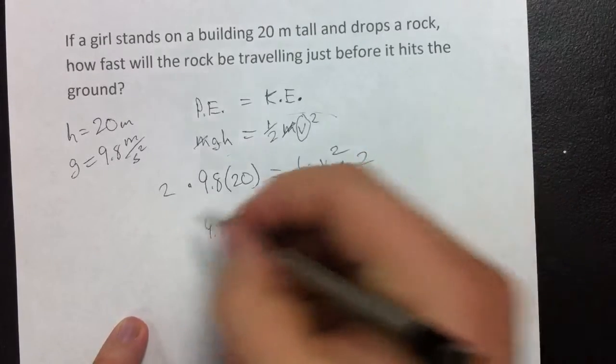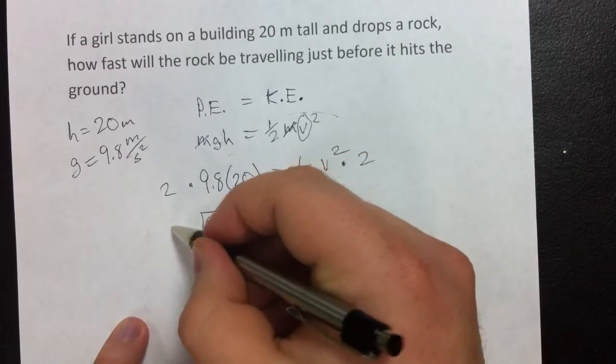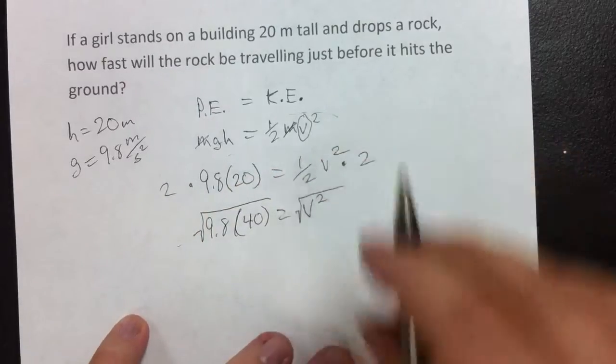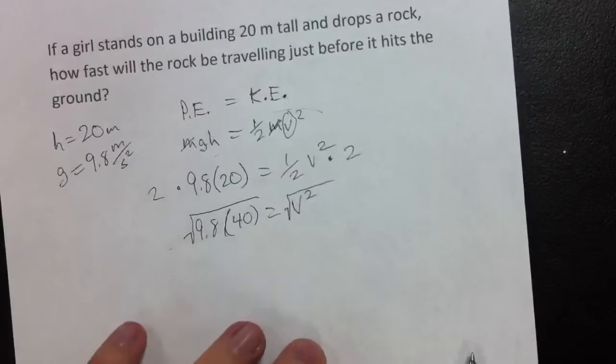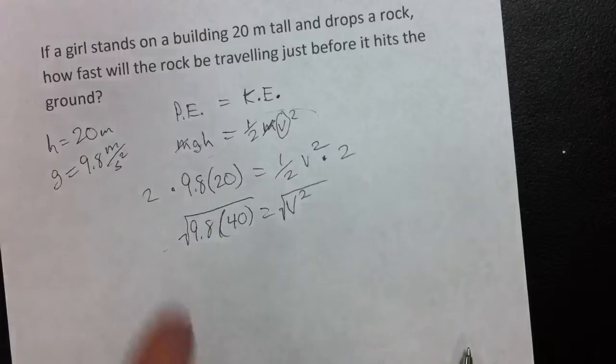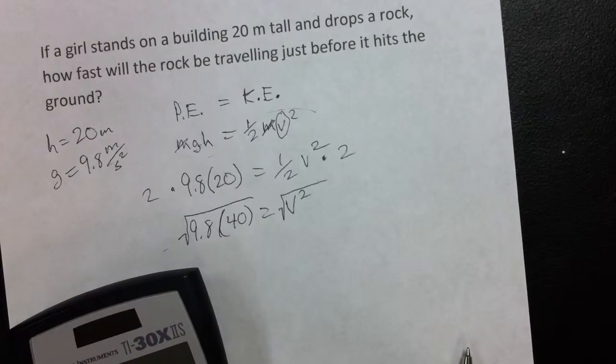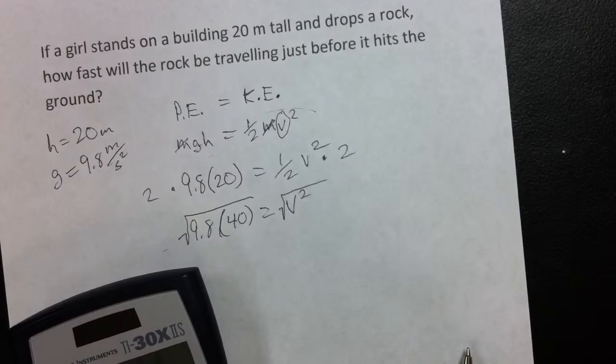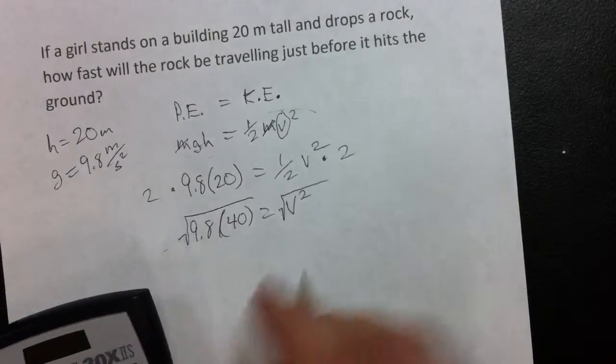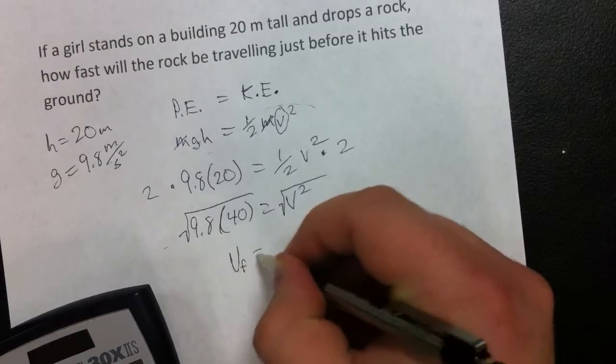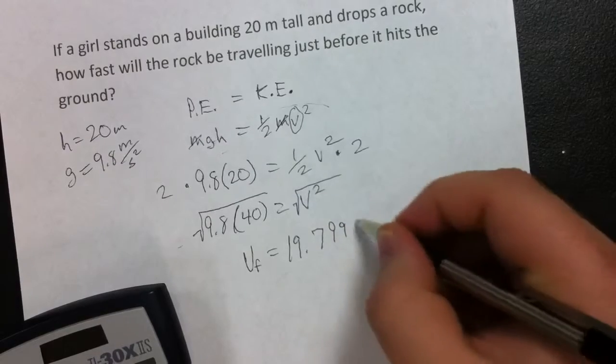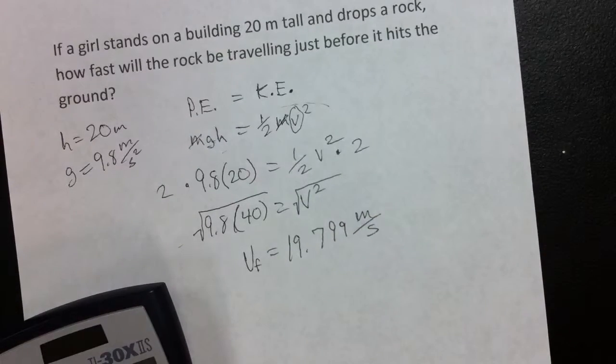Now, we take the square root of both sides. In all technicality, this should be a plus or a minus, but since we just want the magnitude, we're just going to leave it like this. So, on our calculators, if we take the square root of 9.8 times 40, that gives us our final velocity of 19.799 meters per second. And that concludes this problem.